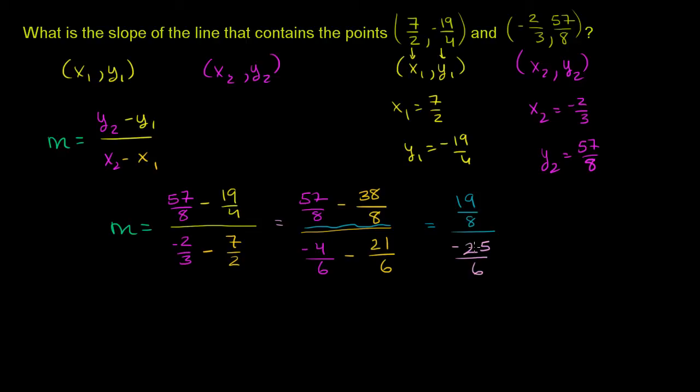-4 minus 21 over 6 gives us -25/6. And so I have 19/8 divided by -25/6. When you divide by a fraction, this is the same thing as multiplying by its reciprocal, multiplying by -6/25.